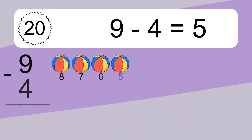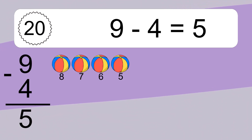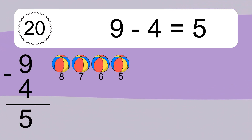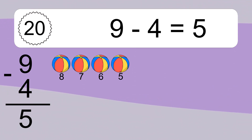9 minus 4 equals what? 9 minus 4 equals 5. Let's count it: 8, 7, 6, 5.